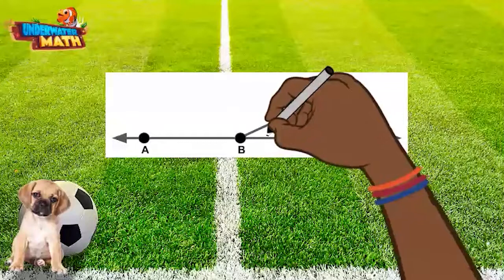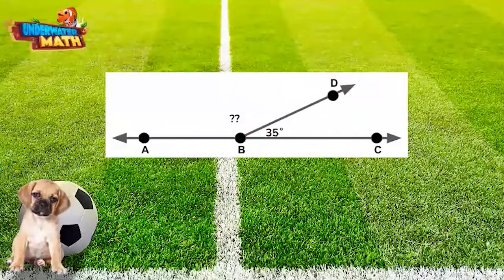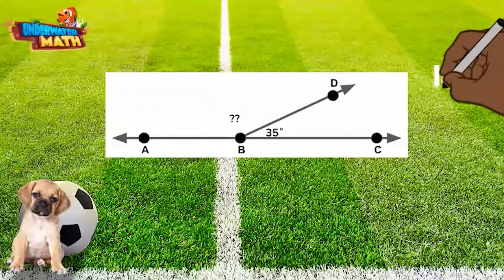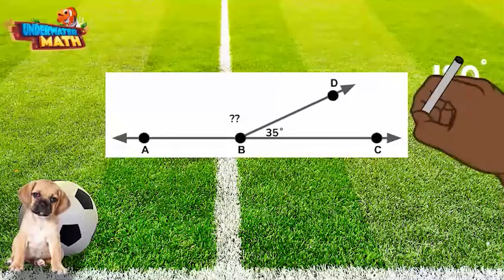What if we know angle BCD is 35 degrees? Can we determine angle ABD based on this information? Yes we can! We know the whole angle is 180 degrees and one piece is 35 degrees. We can subtract the piece we know from the whole to find the missing piece.